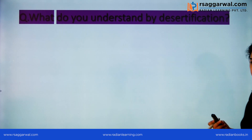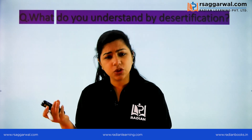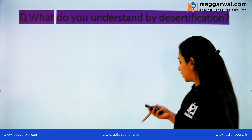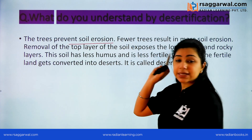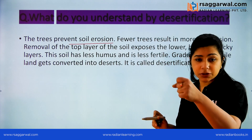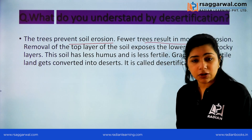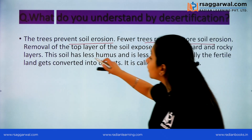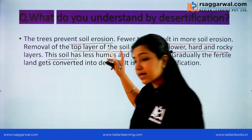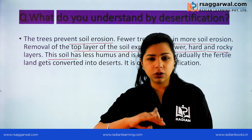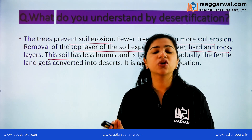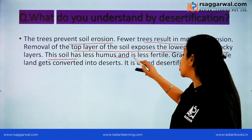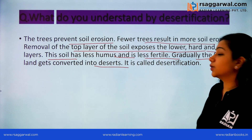What do you understand by desertification? When there is no rain and the land becomes barren, it can be converted into desert — that conversion is called desertification. Trees prevent soil erosion by binding the soil. Fewer trees result in more soil erosion. The removal of the top layer of soil exposes the lower hard and rocky layer. The top layer is the most fertile; once it is damaged, what remains is a hard, dry, infertile layer — a condition resembling desert. As it gets less humus and becomes less fertile, it is gradually converted into desert. This process is called desertification.